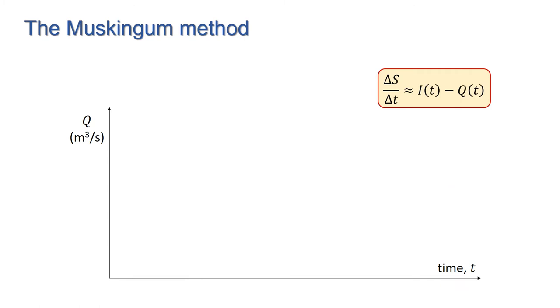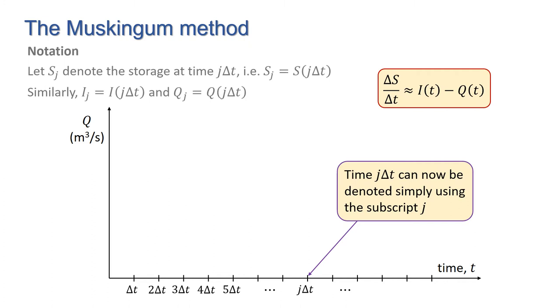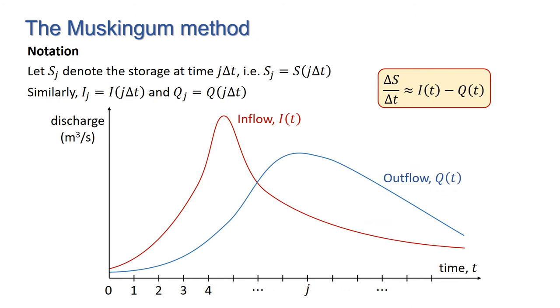Now we have the continuity equation written in terms of values of the incoming and outgoing discharges at discrete times. So we can discretize the domain of the independent variable time t, and we need to evaluate the discharge only at specific times. Here I'm going to introduce some notation for convenience. Let's denote the storage at time j delta t by s_j. Similarly, I'm going to denote the incoming and outgoing discharges of the jth time step by i_j and q_j respectively.